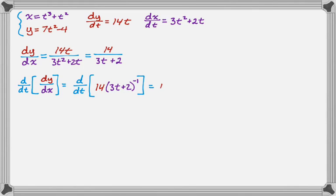So the derivative of this is going to be, we have 14 as a constant multiple. We have 3t plus 2 to the negative first. So bring down the negative 1, and then we get 3t plus 2 to the negative second. And then by the chain rule, times 3. And we can simplify this. So we get negative 42 over 3t plus 2 squared.